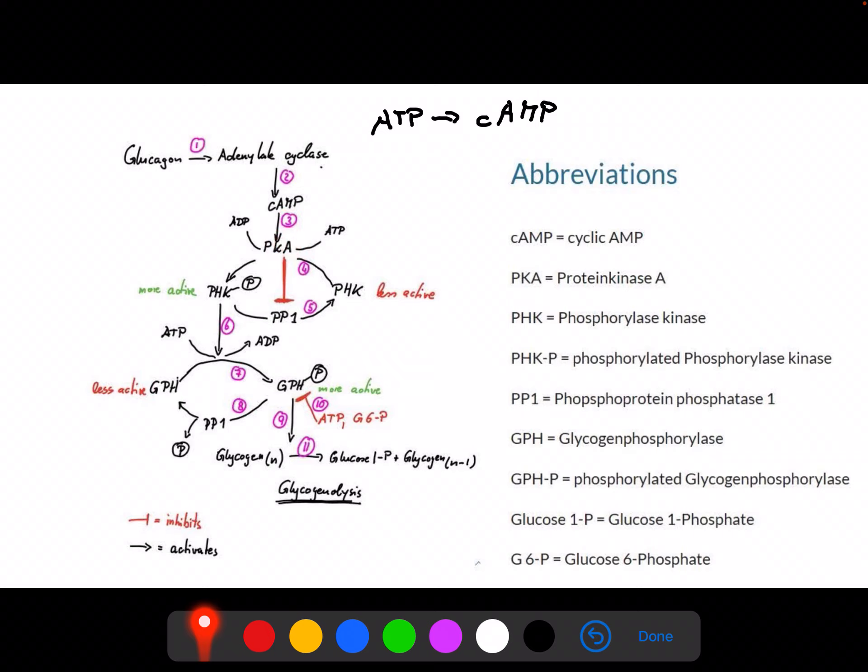Because it is a kinase, we know what it does. It actually transfers a phosphate residue from ATP onto another protein and we generate ADP. So this protein, the target for protein kinase A, is a protein called phosphorylase kinase, PHK.